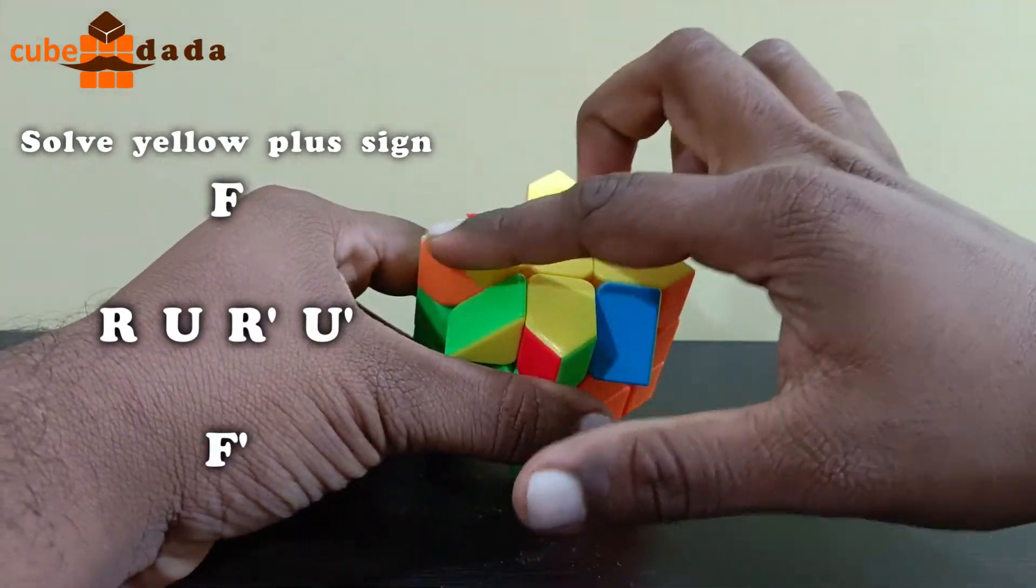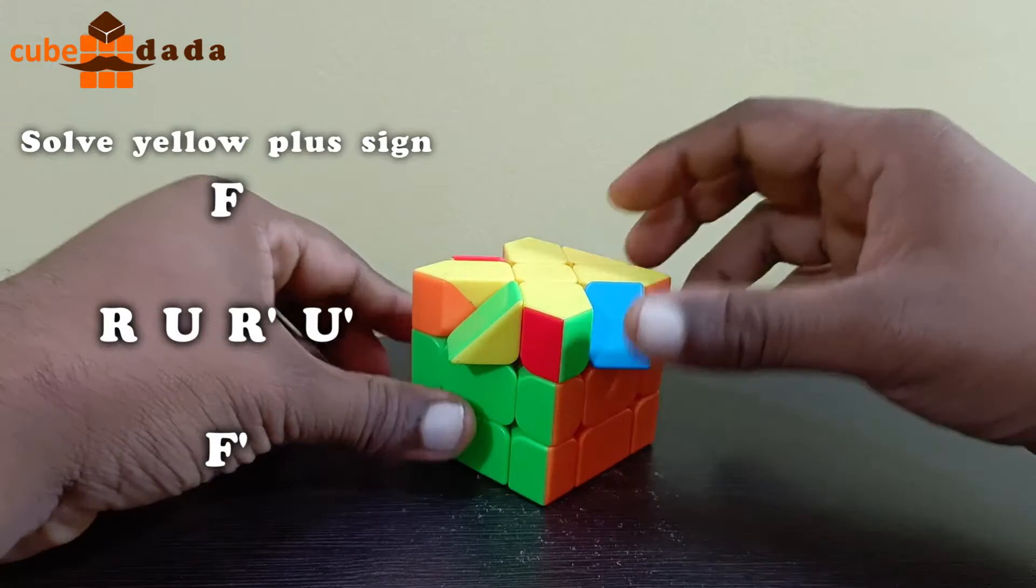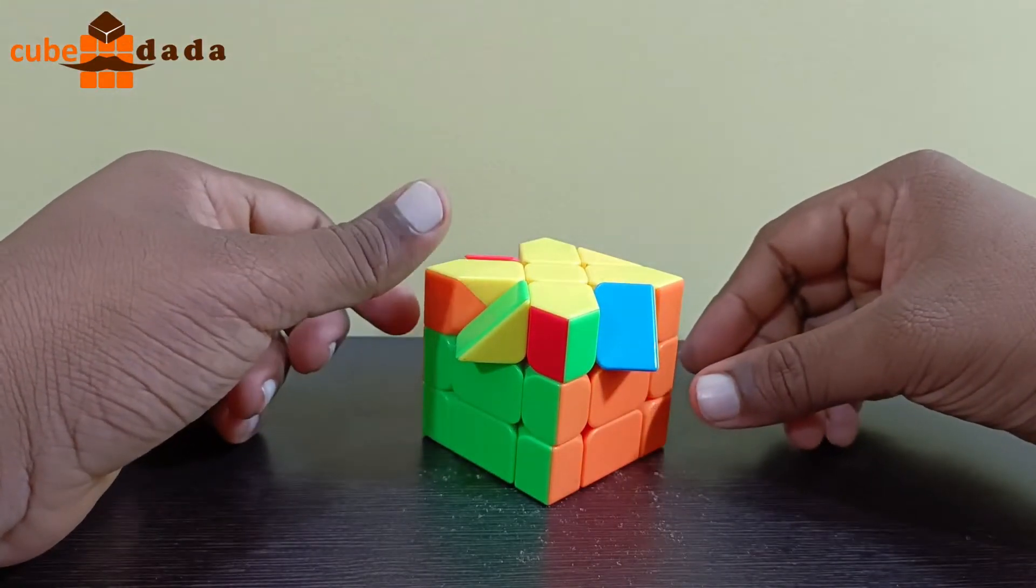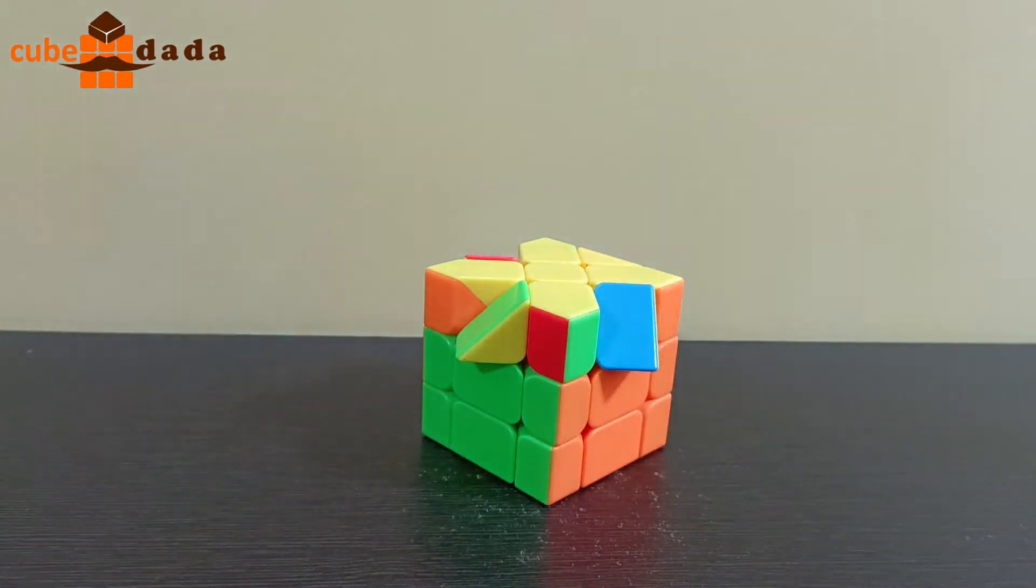And this yellow plus sign is completed. And our edge parity of this Fischer cube is solved. Thank you.